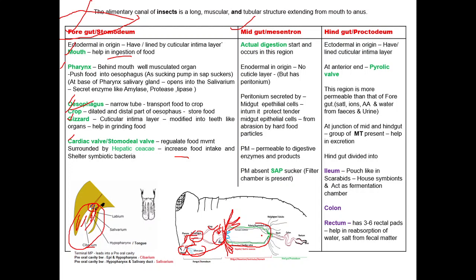The midgut epithelial cells secrete a layer known as peritrophic membrane or peritoneum. This layer protects the midgut epithelial cells from abrasion by hard food particles. The peritrophic membrane is permeable to digestive enzymes and food products.